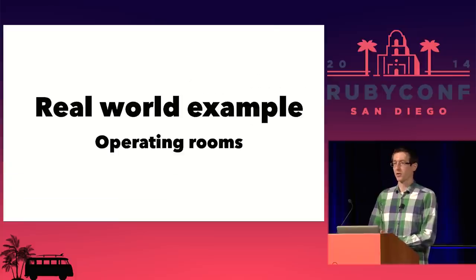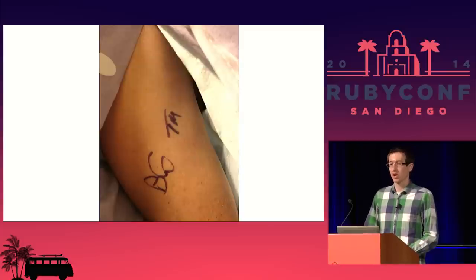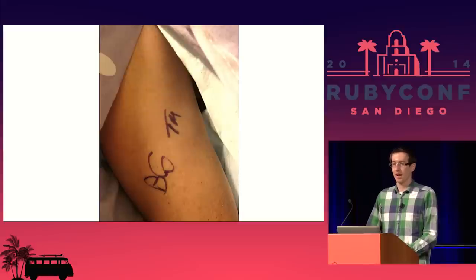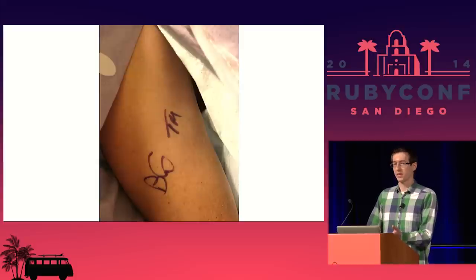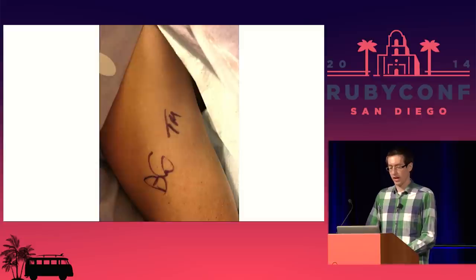Here's a real-world example — not software. Before surgery, doctors will actually come in and initial your body with a Sharpie on the part they're about to operate on. This is essentially mitigation. There could be a bug in the chart software, or someone could have written the wrong thing down. But when they have that scalpel in hand and go to cut — if they don't see their initials on the part of the body they're about to cut, they know something has gone wrong and they can fail fast. It's almost silly, but it's actually really powerful. There are horrible stories about errors in charts causing surgeons to amputate the wrong arm or operate on the wrong eye.